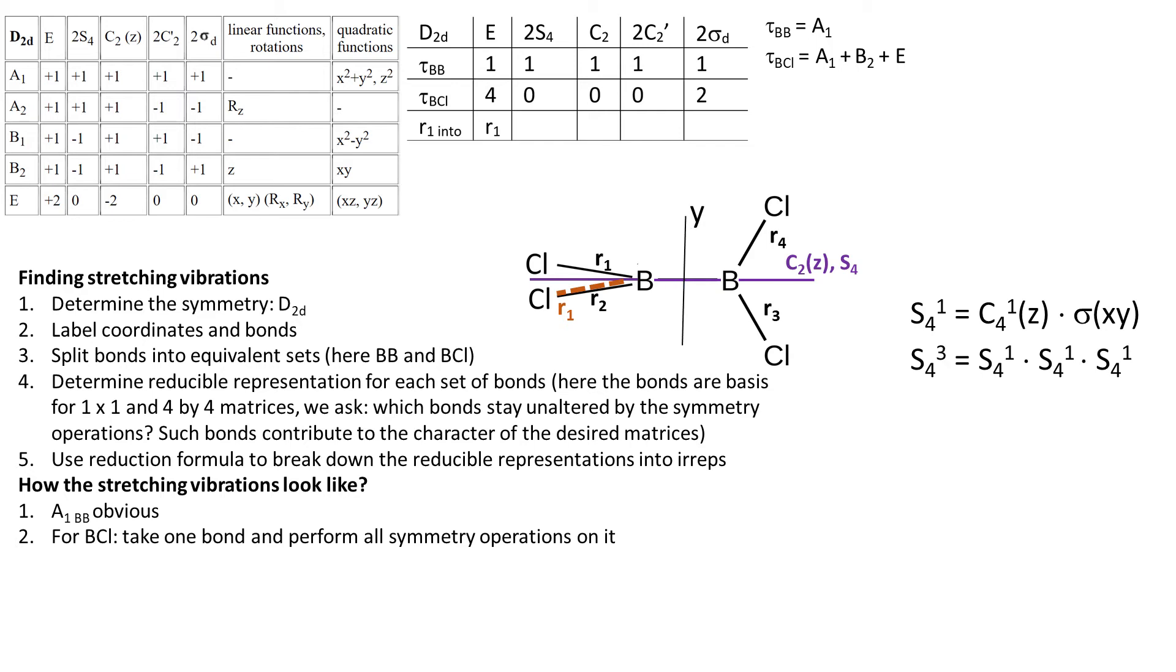Lastly, for S4³, we need to do S4¹ one more time. And so the bond goes down and is reflected and it becomes R3. So under the two S4 operations, R1 becomes R4 and R3.